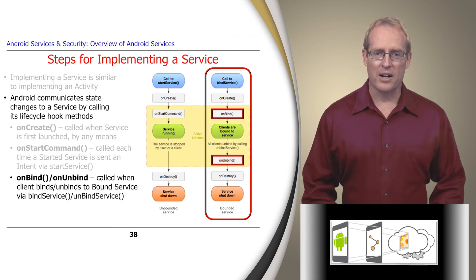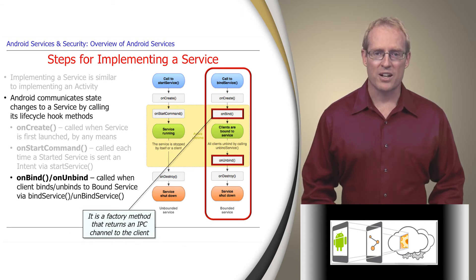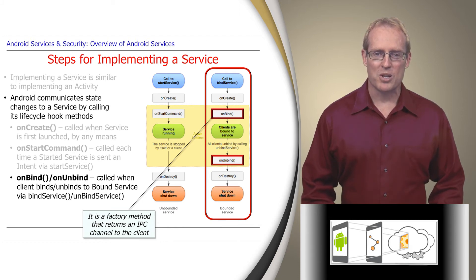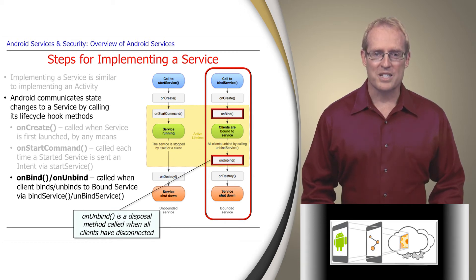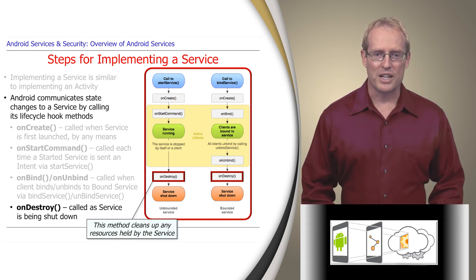The onBind and onUnbind hook methods are called automatically by the Android service framework when a client binds or unbinds to a bound service via bindService or unbindService respectively. onBind receives the Intent passed to bindService and is a factory method that returns the inter-process communication channel used by a client to communicate with the service. This IPC channel is typically an object described using the Android Interface Definition Language. onUnbind is a disposal method called when all clients have disconnected from an interface published by the service. Finally, the Android service framework dispatches the onDestroy hook method to notify a service that it's being removed and should clean up any resources it holds.